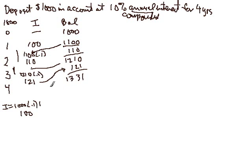And again if we do this for the fourth year, what is our interest going to be? It's going to be $1,331 times 0.1 which comes out to be $133.10 which when we add to the current balance is going to give us $1,464.10.